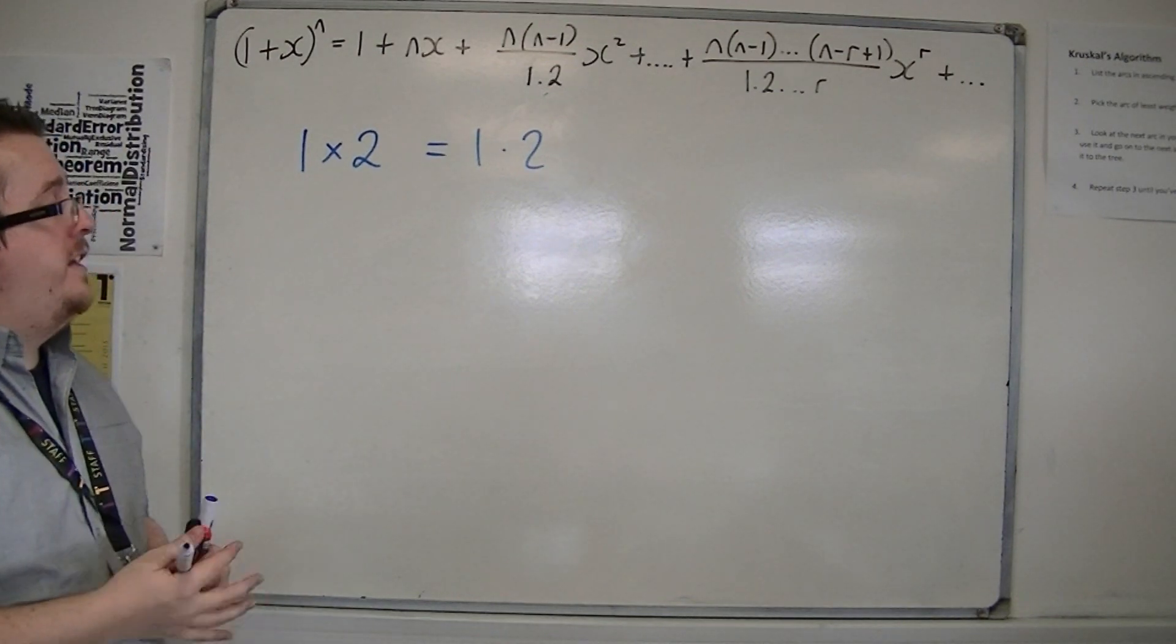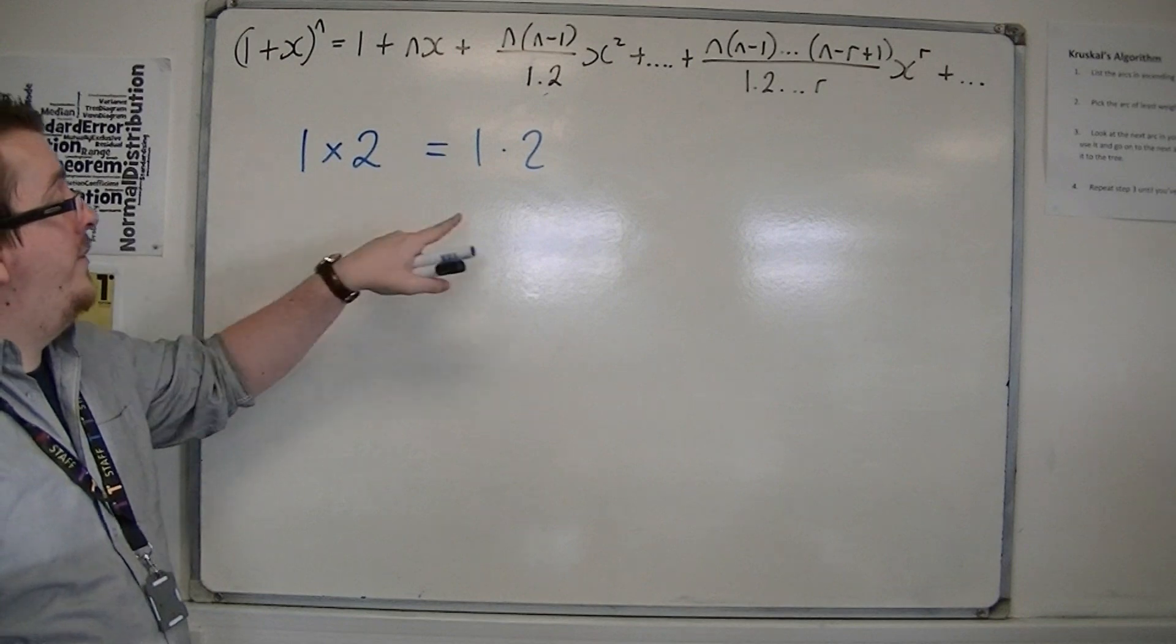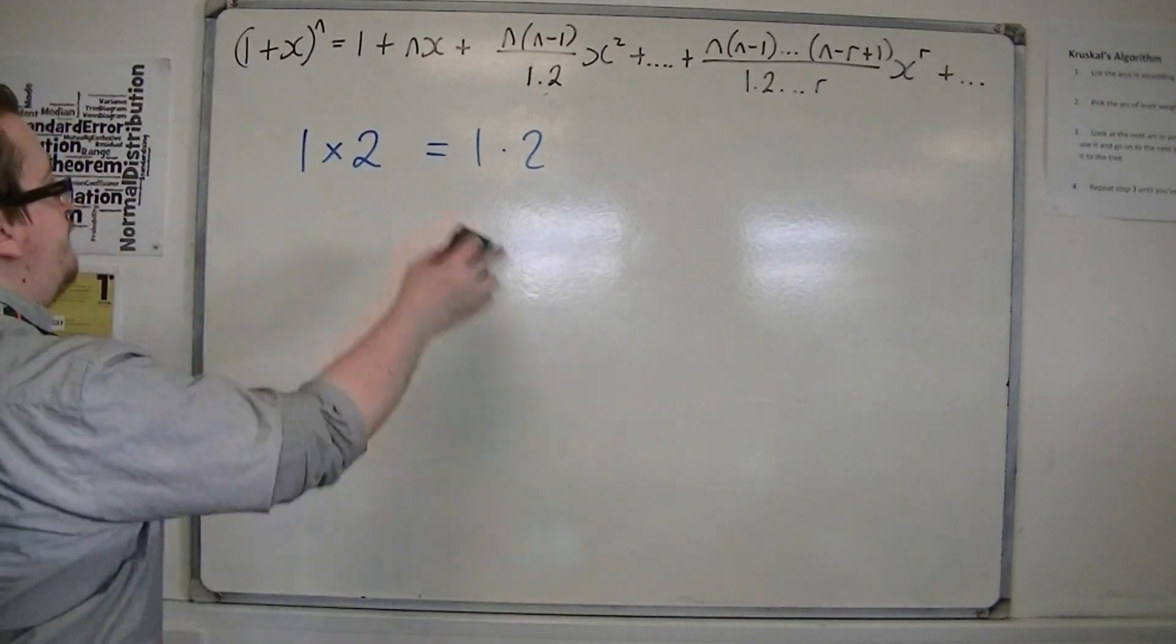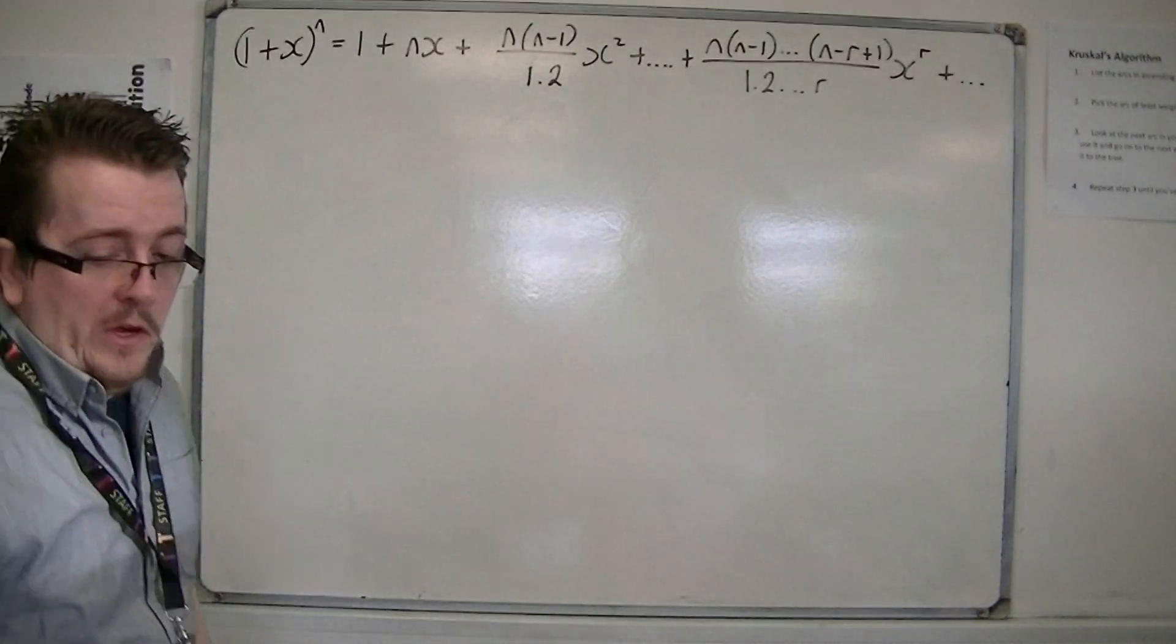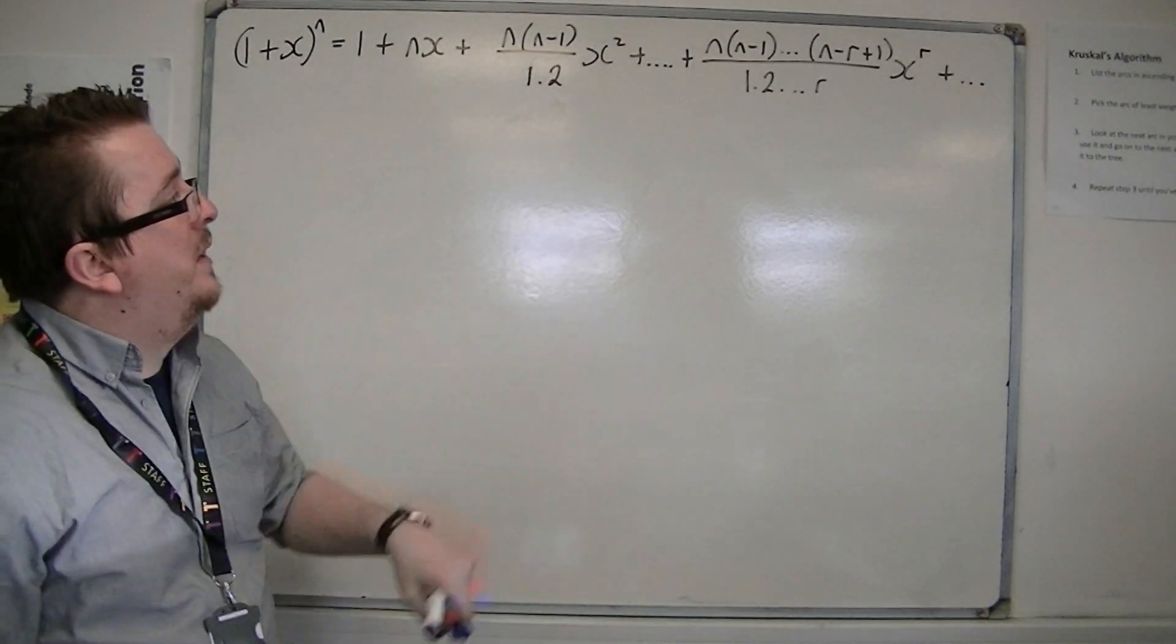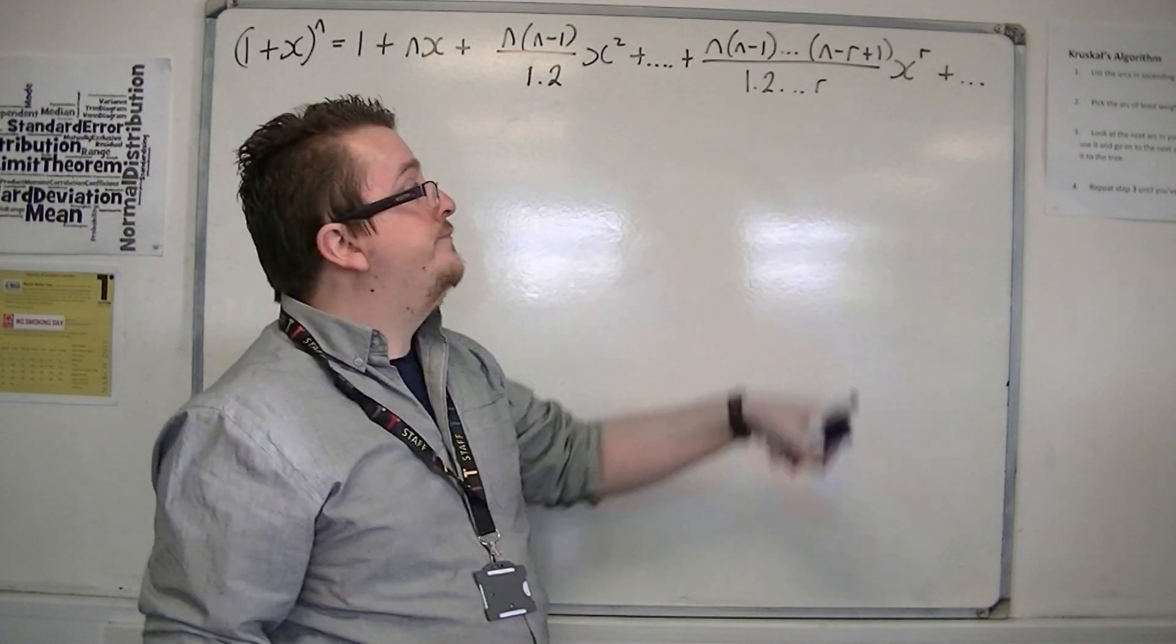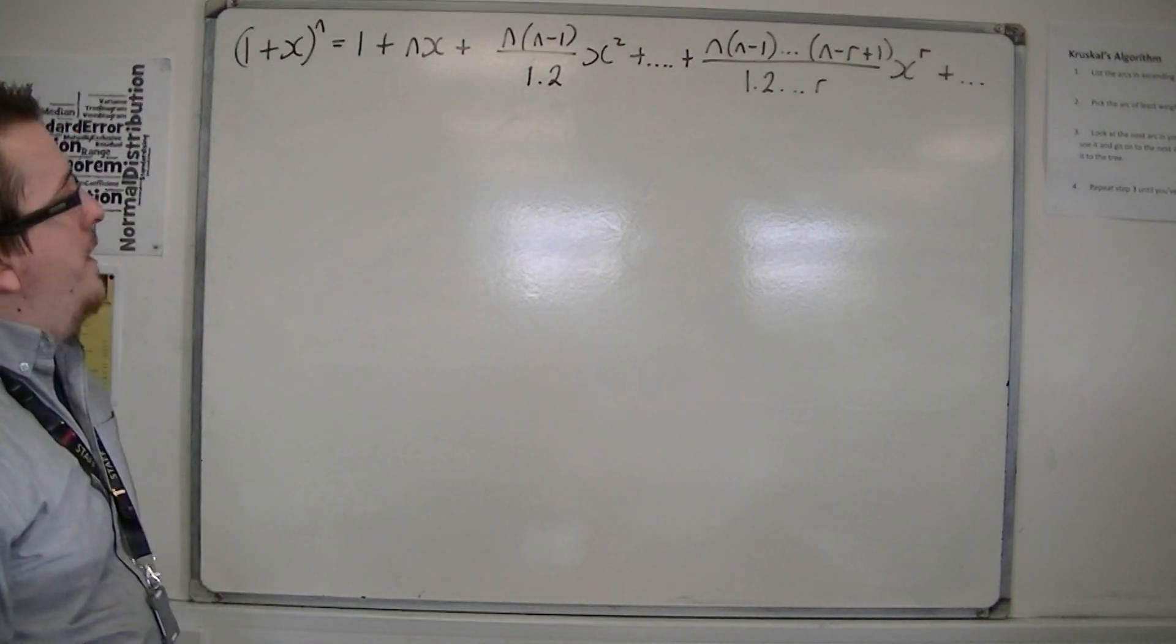So that's really the first thing to point out. The reason why the multiplication symbol goes by the wayside is just because that's quicker to use and quicker to actually write down. So that's just something you need to get used to. So these aren't decimal points. This means 1 times 2, and over here that means 1 times 2 times 3 times 4 times 5, all the way up to r.